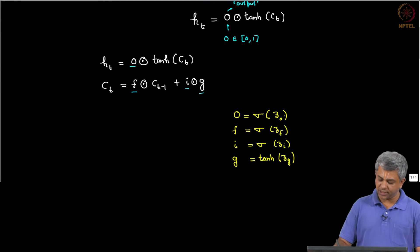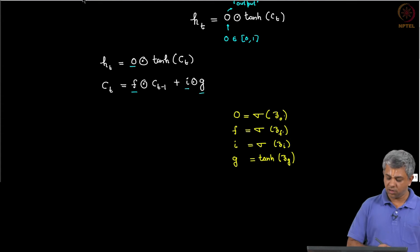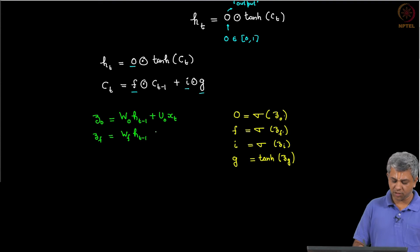Now what are these Z_O, Z_F, Z_I, Z_G? We can write them down pretty easily. Z_O will be W_O H_{t-1} plus U_O X_t, similarly Z_F will be W_F H_{t-1} plus U_F X_t, Z_I is W_I H_{t-1} plus U_I X_t, and finally Z_G is W_G H_{t-1} plus U_G X_t.